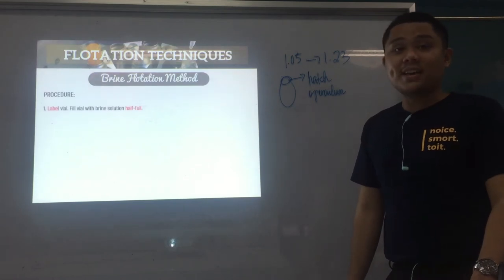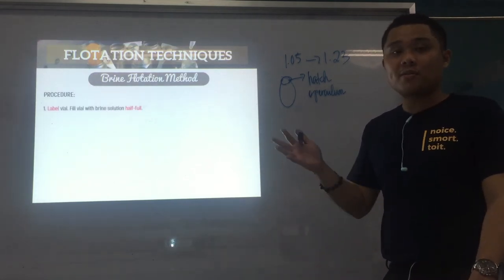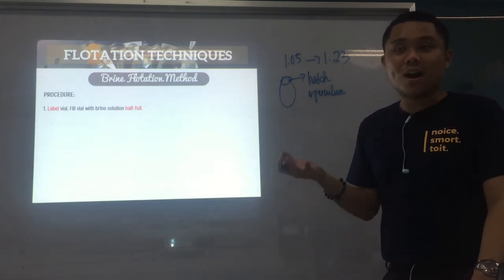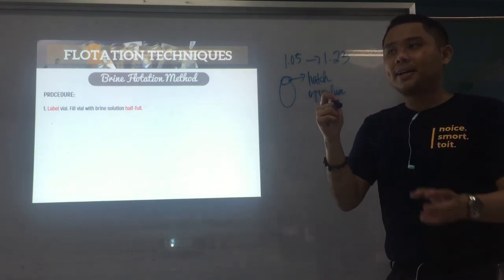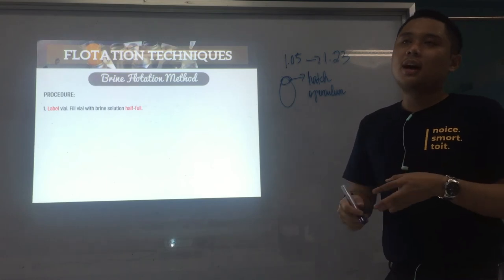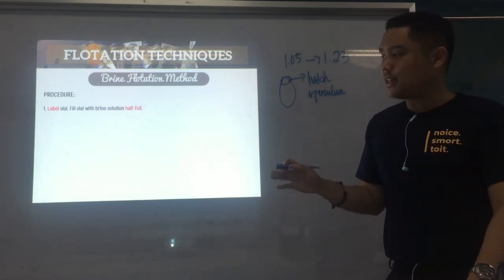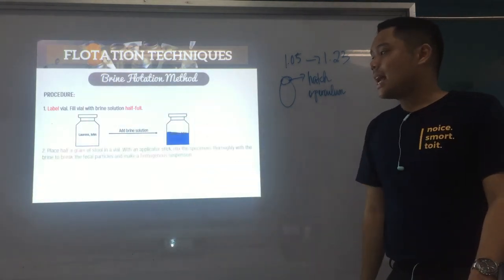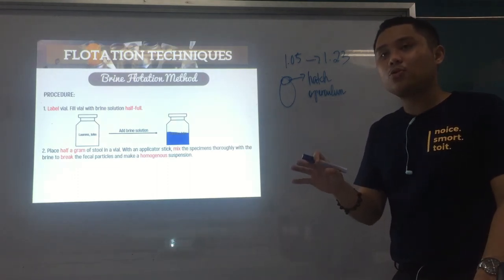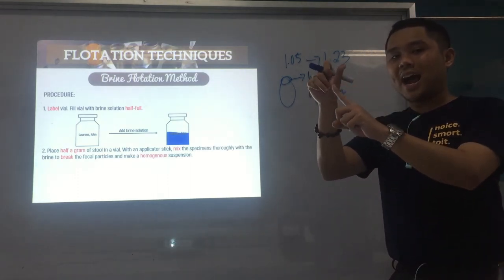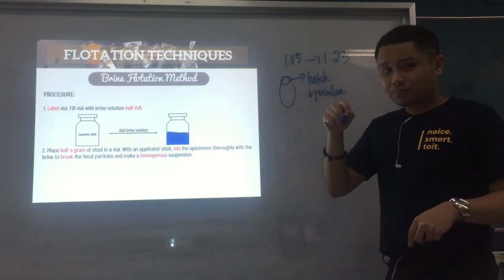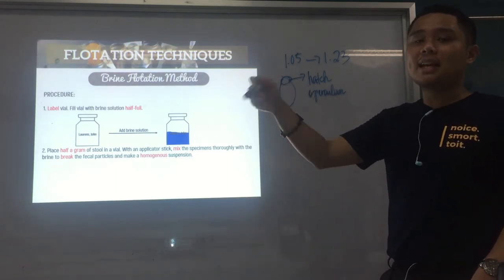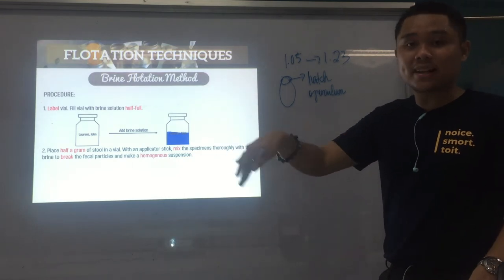For the procedure: first, get a vial and label it. Fill the vial with brine solution half full. Then place half a gram of stool — about half the size of a thumb. Using an applicator stick, mix it with your brine solution until you form a homogenous suspension, thoroughly mixed.